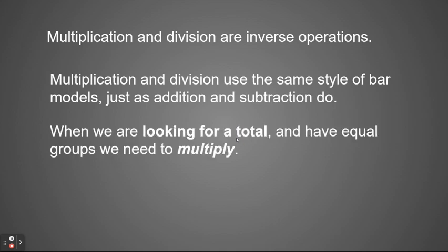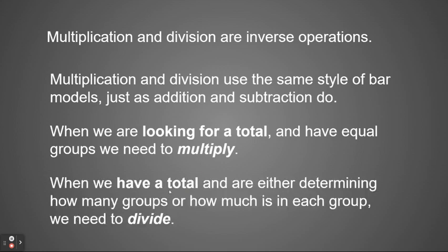So when we're looking for a total and we have equal groups, we learned in previous lessons that we need to multiply. Now, if we have a total and are either trying to determine how many groups or how much is in each group, we're going to need to divide. So the difference is: looking for a total, we'll multiply; if we have a total, we're going to need to divide. Keep that in mind as we try some of these problems.